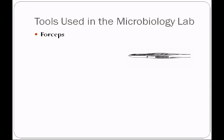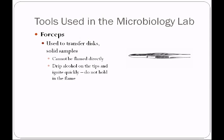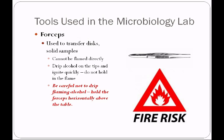We're going to be using forceps. We use these to transfer things such as filter paper discs or solid samples — for example, a catheter that is sent to the laboratory we want to transfer into a liquid broth. A mycologist studying fingernail clippings, for example, would transfer that solid sample with forceps. Forceps can't be flamed directly as they would get too hot and you would burn your fingers. So we drip alcohol on the tips and ignite them quickly by just sticking them in the flame — we don't hold them in the flame, we just get the alcohol to ignite and let it burn off. This sterilizes the forceps. Be careful not to drip flaming alcohol on the table, on your book, or on yourself. Be sure to hold the forceps horizontally above the table. If the forceps get too hot, you can always drop them in the sink in the middle of your table.